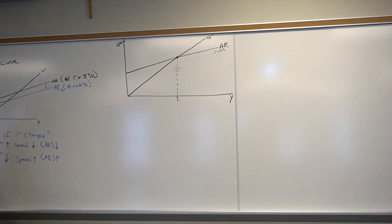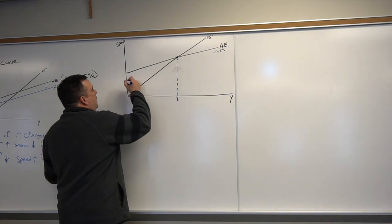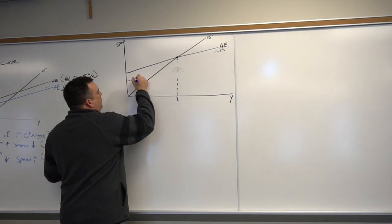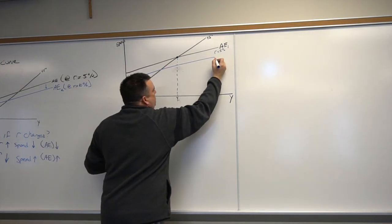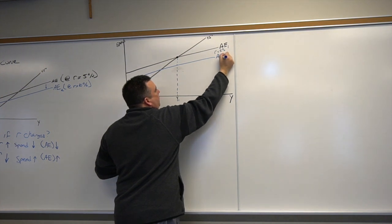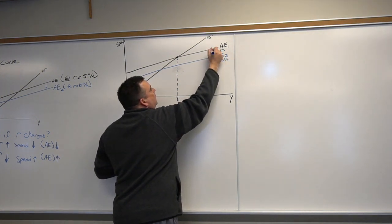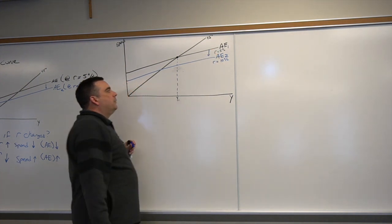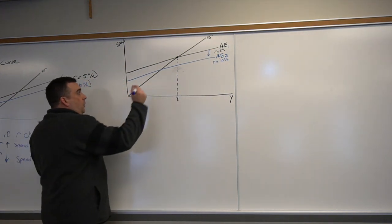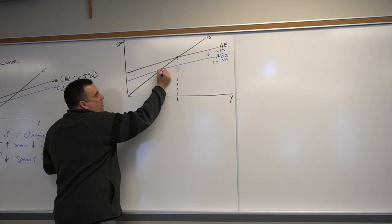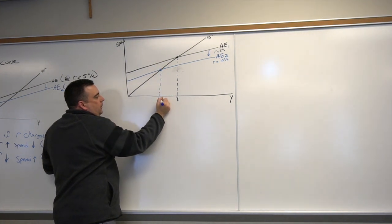What happens when we raise the interest rate? Our aggregate expenditure function fell, so we went to AE2, and R was equal to 10%, right, shift downward. That gives me some new Y2 value.